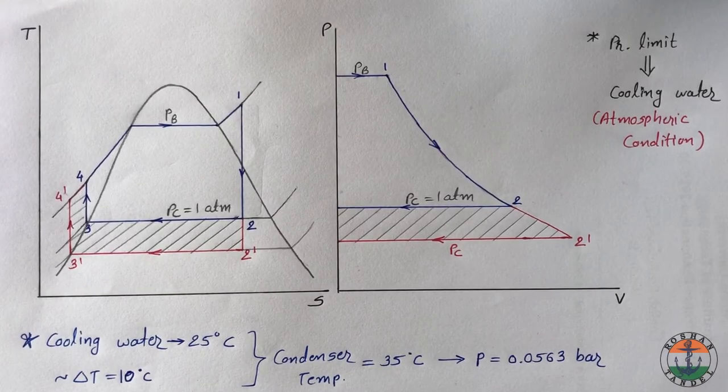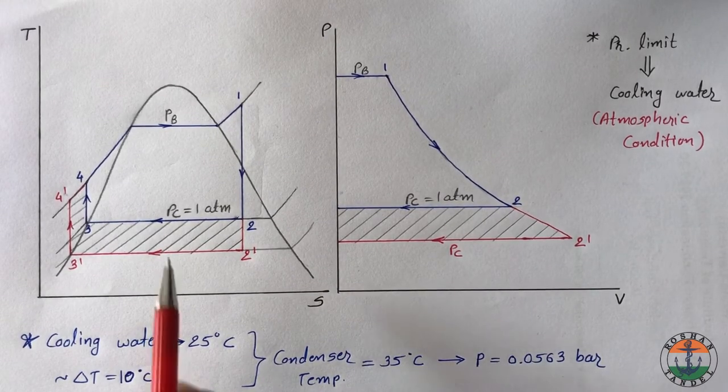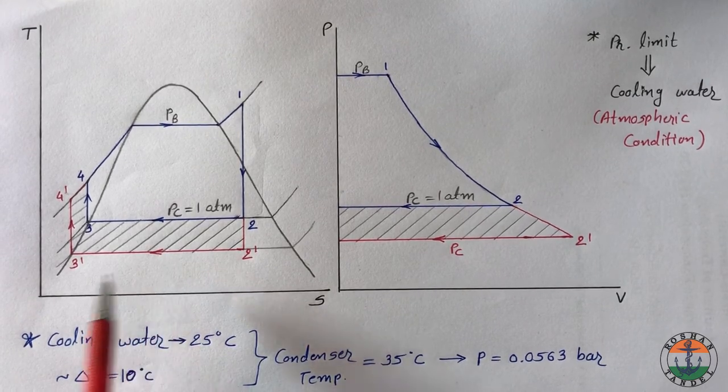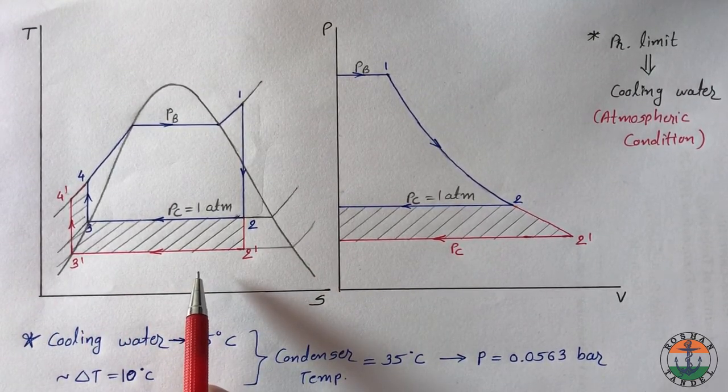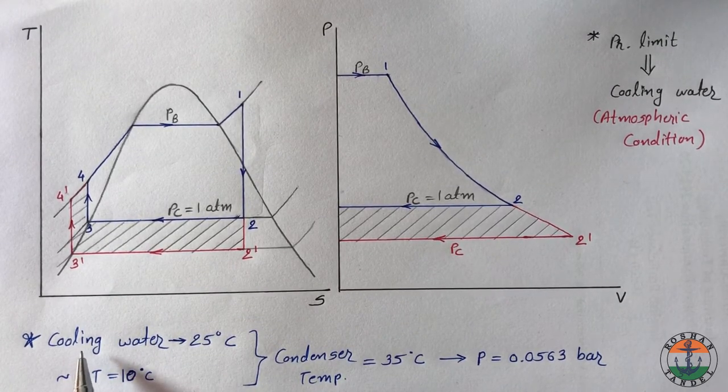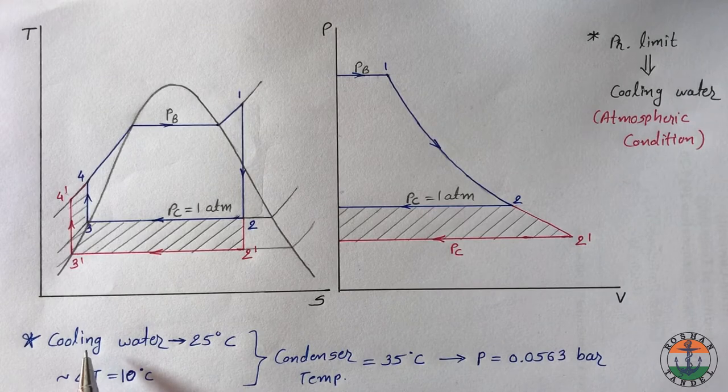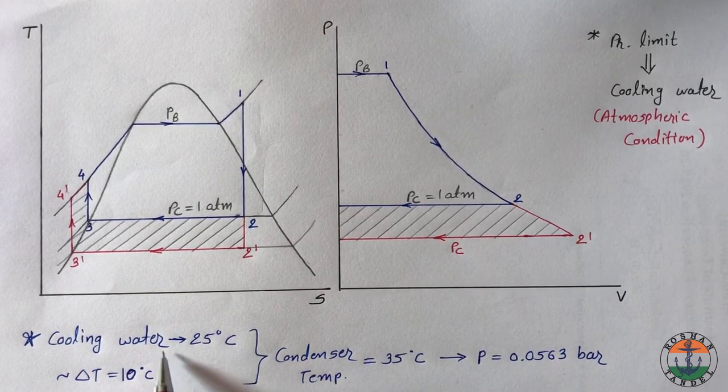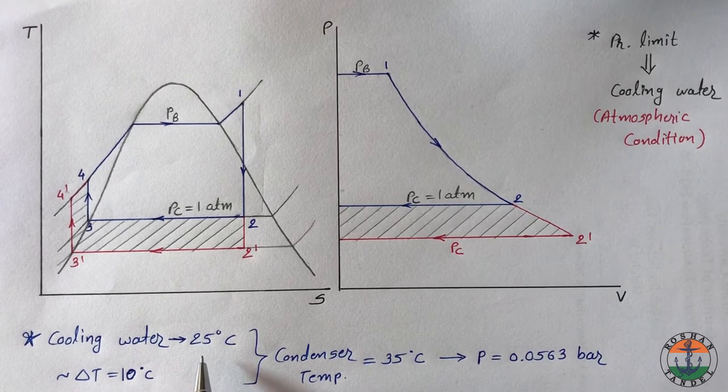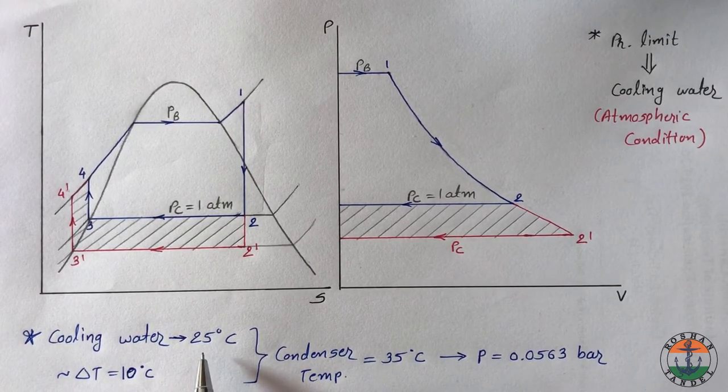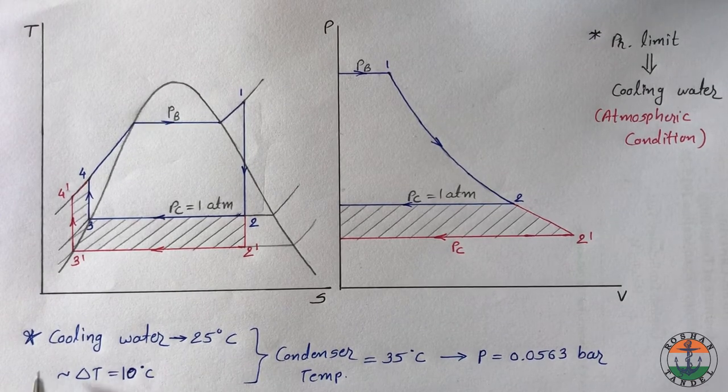Now the question is at what extent you can reduce the condenser pressure. To solve this issue you have to consider the cooling medium which is water circulated in the condenser. Let us assume that water is available at 25 degree Celsius.